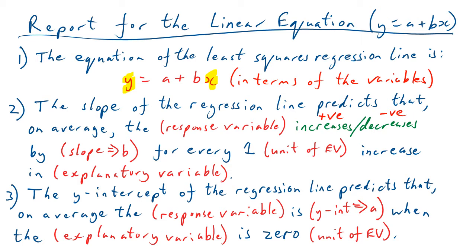And then the third sentence is the y-intercept of the regression line. And it predicts that on average, the response variable is what the a is, when the explanatory variable is zero. And don't forget to put your units in there of explanatory variable. Maybe that doesn't make sense. Let's put that into an example.